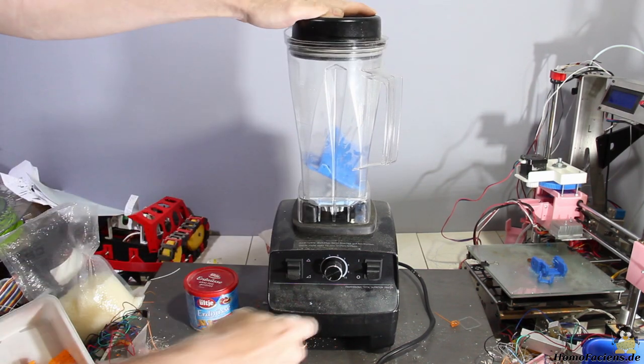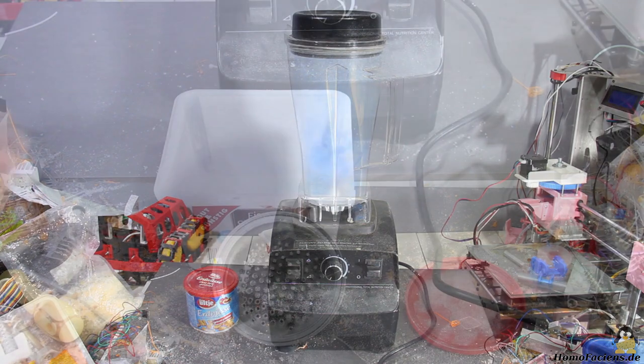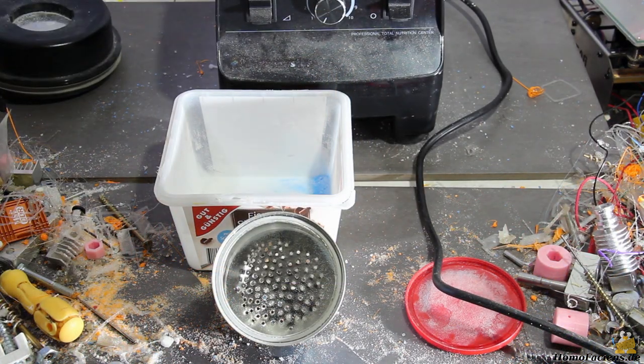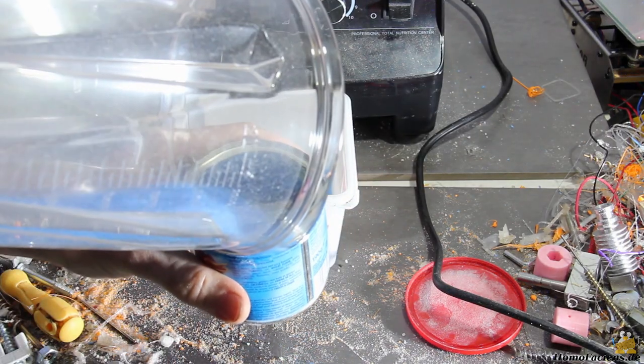For now I get my granules with a commercial blender. The raw material is then filled into a homemade sieve to get only granules below a diameter of 2mm.